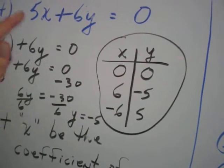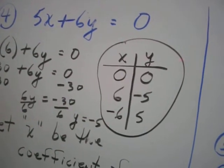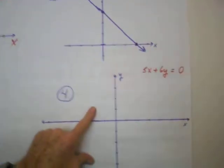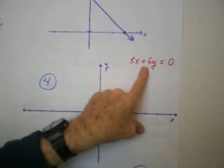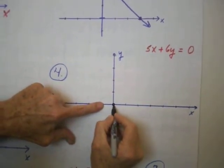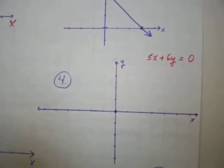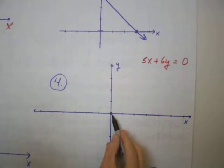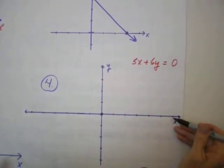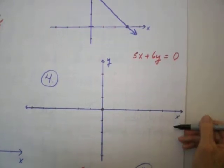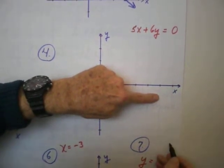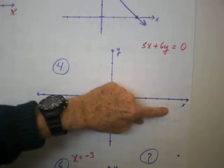When I get done graphing this one, we'll do this kind of problem a second time through so you'll see it. Let's plot. I'm over here on number 4. The equation is 5X plus 6Y equals 0. The first ordered pair is 0, 0 — right at the origin. The second point is 6, negative 5. Move over on the X axis positive 6: 1, 2, 3, 4, 5, 6. The Y value is negative 5, so come down: negative 1, 2, 3, 4, 5. There's your second point.